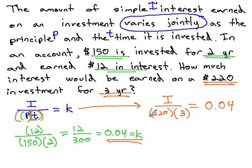In order to start solving, we'll want to multiply in that denominator first. That'll give us I over 660 equals 0.04.